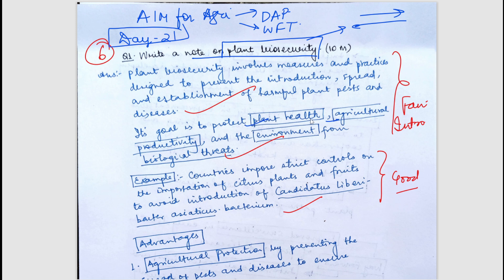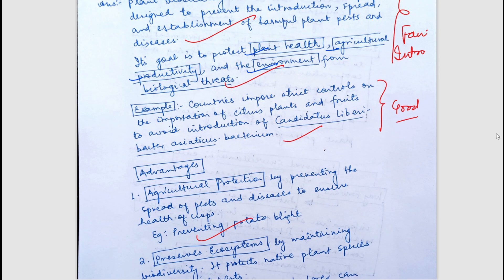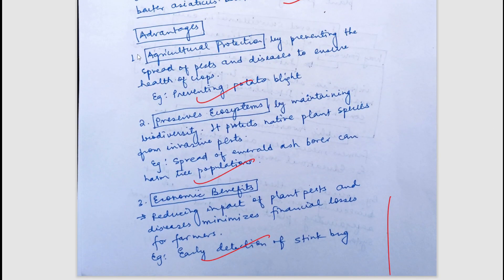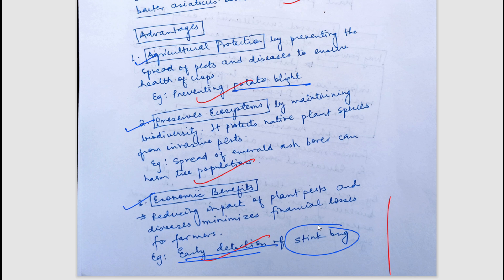The student nicely introduced plant biosecurity and mentioned its goals: plant health, agricultural productivity, safety of environment, and safety from biological threats. Advantages were well covered — primarily the prevention of diseases and pests entering our agricultural atmosphere. Examples such as preventing potato blight were mentioned. Economic benefits like early detection were noted, with the example of the extinct bug given. Adding examples and citing sources for facts always enhances your answer.